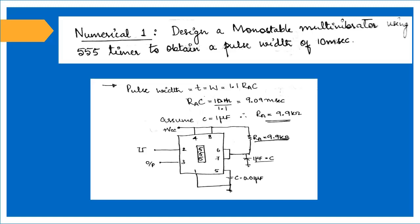Substituting, we obtain Ra C = 9.09 milliseconds and Ra = 9.9 kilohms.